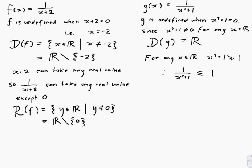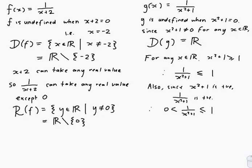Don't forget to flip your inequality signs when you do reciprocals. Also, since x squared plus 1 is positive, 1 over x squared plus 1 is also positive. So therefore 0 is less than 1 over x squared plus 1, which is less than or equal to 1. It can't actually be equal to 0 because you can't produce 0 by doing division. So our range is all values from 0 to 1, not including 0 but including 1. The range of g is the set of y in R such that 0 is less than y is less than or equal to 1.